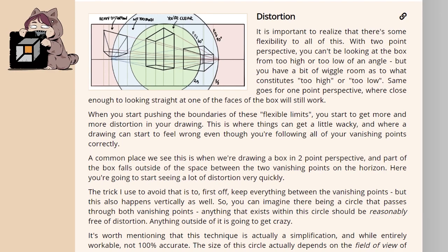Distortion. It is important to realize that there's some flexibility to all of this. With two point perspective, you can't be looking at the box from too high or too low of an angle, but you have a bit of wiggle room as to what constitutes too high or too low. Same goes for one point perspective, where close enough to looking straight at one of the faces of the box will still work. When you start pushing the boundaries of these flexible limits, you start to get more and more distortion in your drawings. This is where things can get a little wacky and where a drawing can start to feel wrong, even though you're following all of your vanishing points correctly.